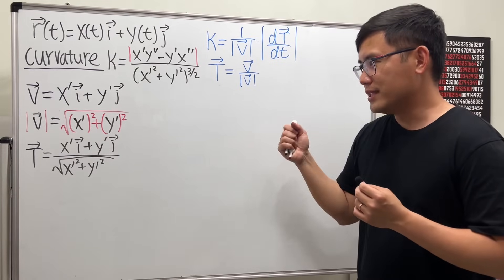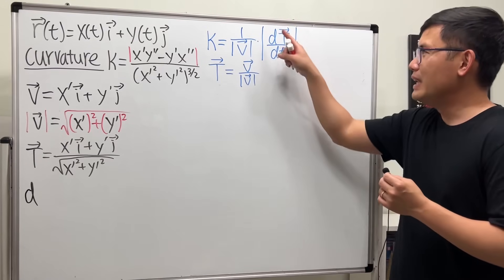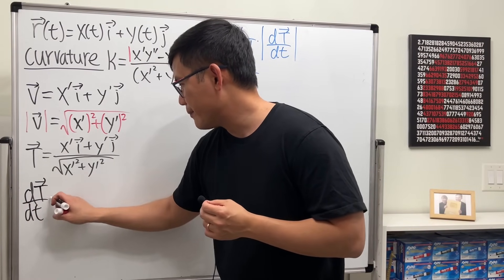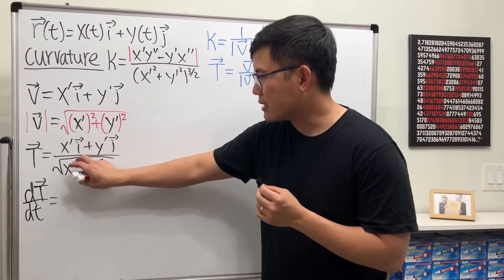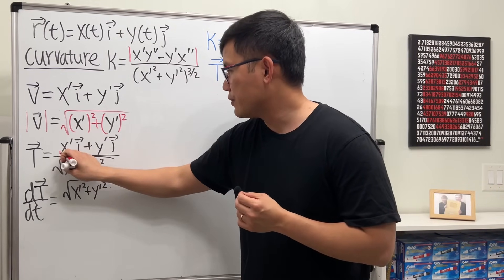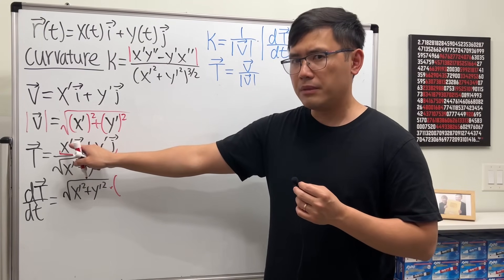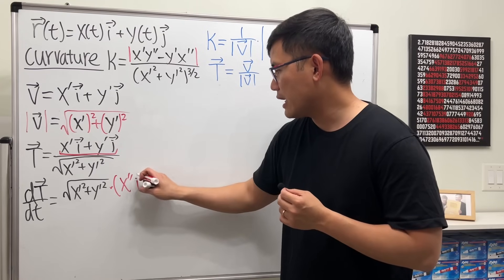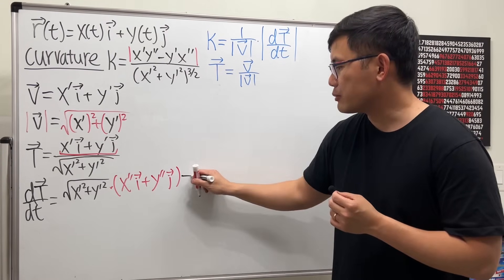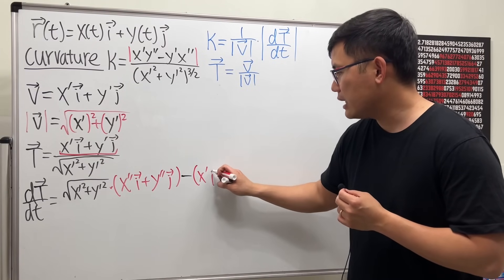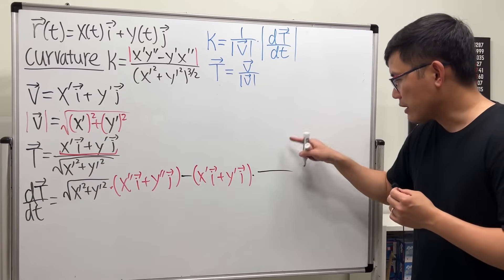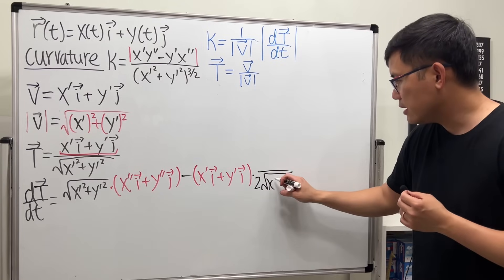After applying the quotient rule we'll find the magnitude and simplify, but let's continue. For dT/dt, using the quotient rule, write the bottom first: square root of x-prime squared plus y-prime squared, times the derivative of the top — the derivative of x-prime is x-double-prime, so we get x-double-prime i plus y-double-prime j. Then subtract the top function, x-prime i plus y-prime j, multiplied by the derivative of the bottom.